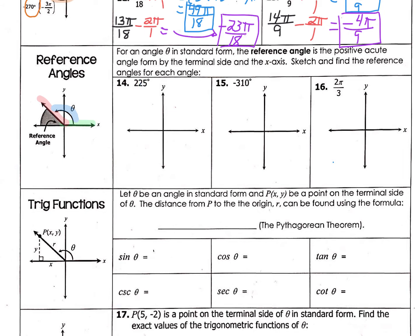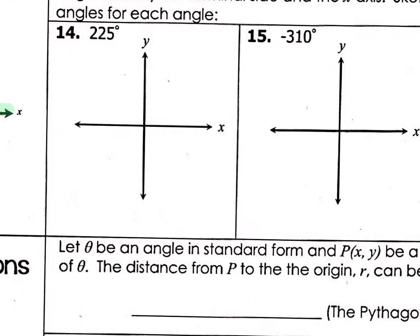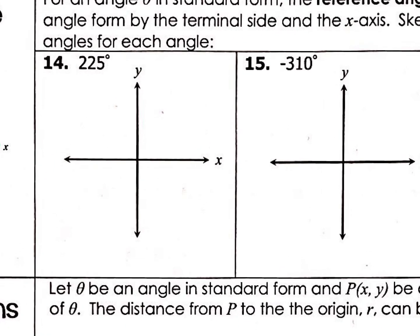So let's start with 225. For 225, I'm going to label the axes: this is zero degrees, this is 90 degrees, this is 180 degrees, and this is 270 degrees. So I've now gone past 225.